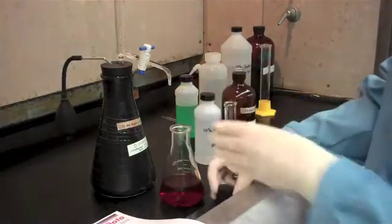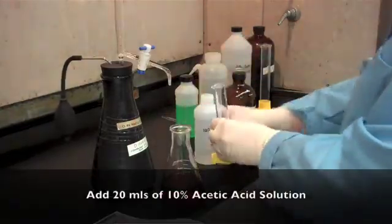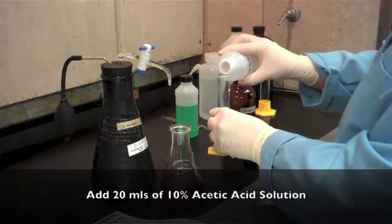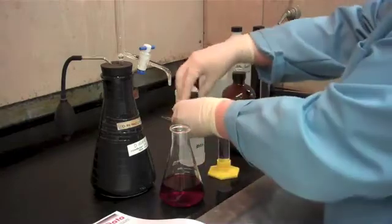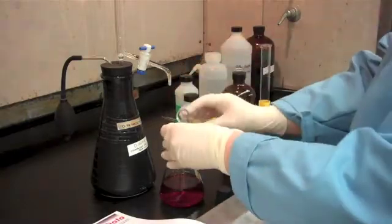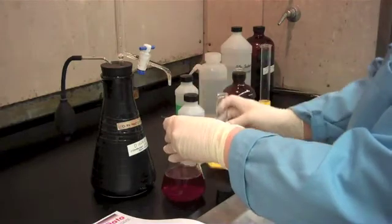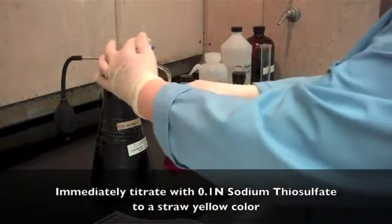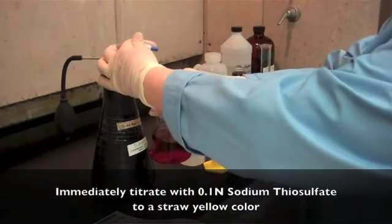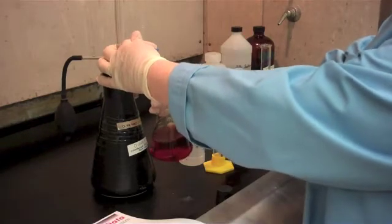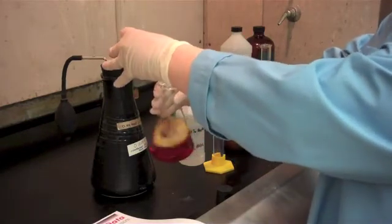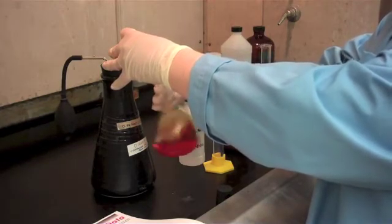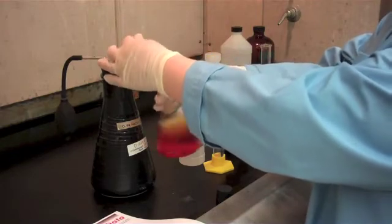So now you unstopper the flask, and we're going to add 20 milliliters of 10% acetic acid. And we are going to titrate to a straw yellow color with 0.1 normal sodium thiosulfate. And you'll see as the reaction progresses, it goes from dark to light yellow.